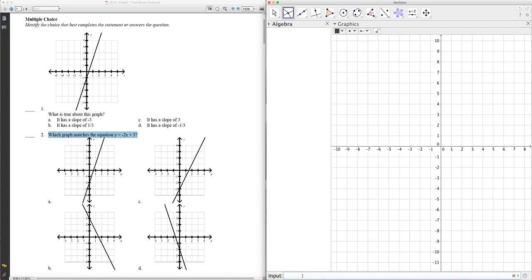Which graph matches the equation y equals negative 2x plus 3? So if I had no idea where to start, if I was totally lost, if I forgot what the slope-intercept form of an equation is and what it means, then I would use GeoGebra to type in the equation y equals negative 2x plus 3 in the input bar, enter, and there you go. You've got the graph. That quick, that easy, no big deal.